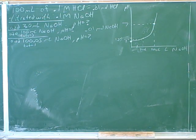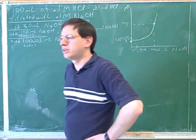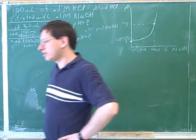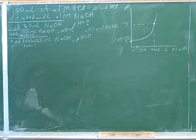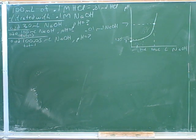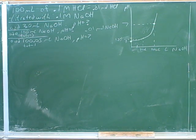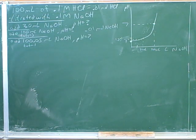Let me interrupt for a second — which case did we just do in the handout? With equal amounts of acid and base, for a strong acid and a strong base. It should be marked in the handout that we saw how to deal with that. So if you have a strong acid and a strong base and you've added equal amounts of acid and base, it should be intuitive that you'll end up with a neutral solution, which has a pH of 7.